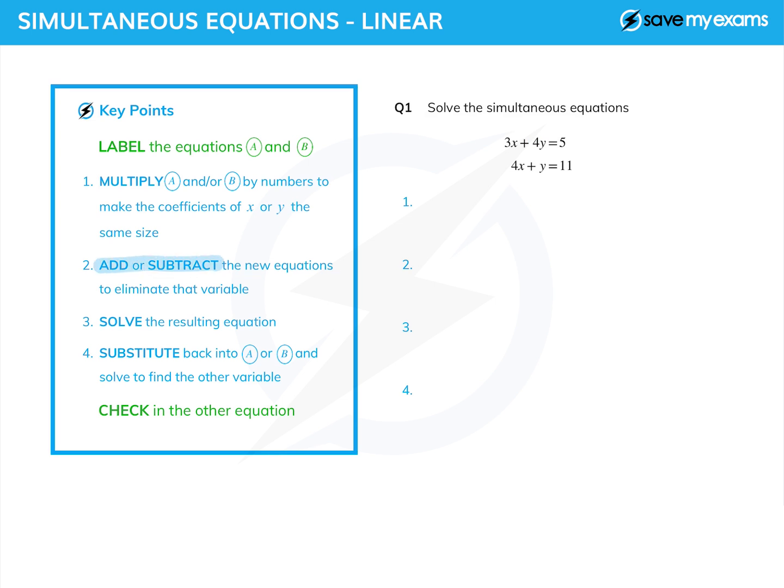Why would I do that? Well, I could then add, or in this case subtract, the new equations, and that would get rid of the y's and leave me with an equation in x, which I can then solve. And having found x, I can substitute that back into either of my original equations to find the other variable, in this case y. And then the beauty of simultaneous equations is you can always tell if you're right, because you just use the equation you haven't just used, the other equation, and check. So let's do that.